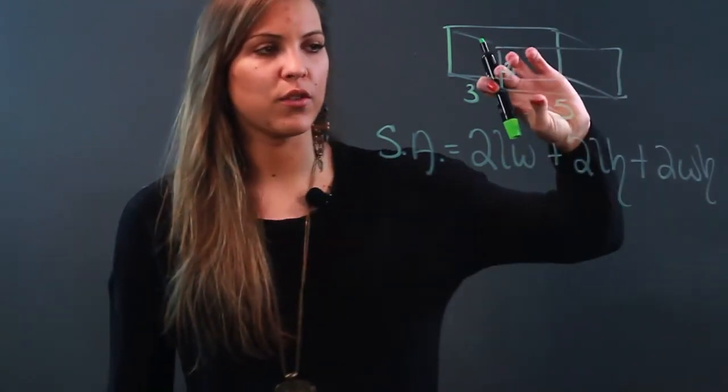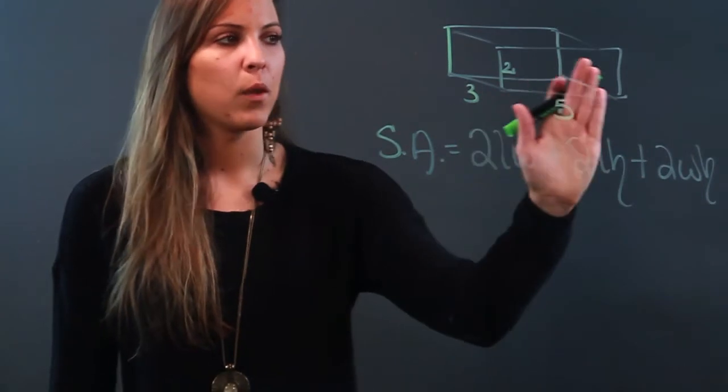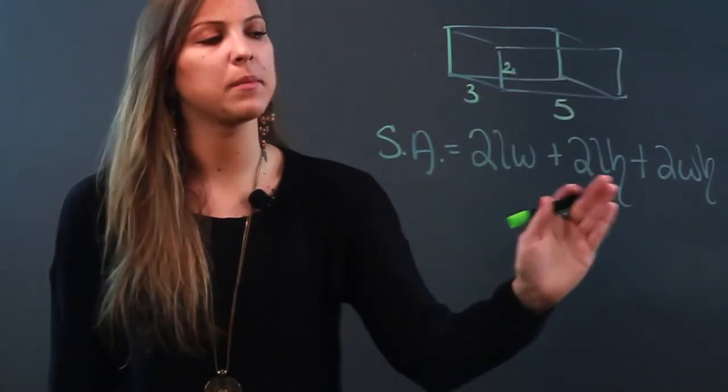So essentially what you're doing is making sure that you pair up each of these numbers and then multiply them by 2, because whatever the area of this front piece is right here is also going to be the area of the back piece. That's why we multiply each of them by 2.